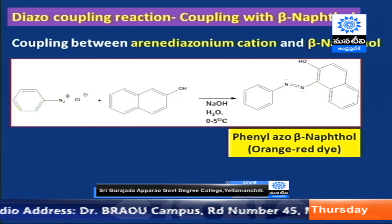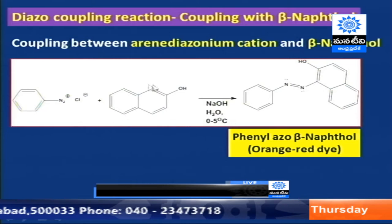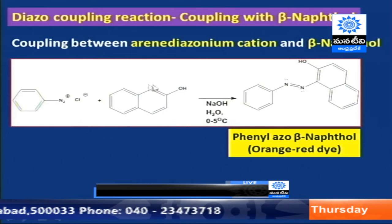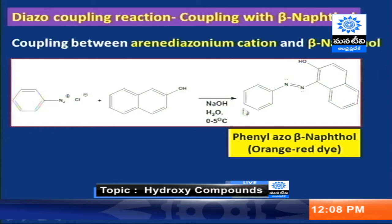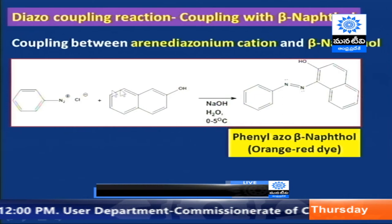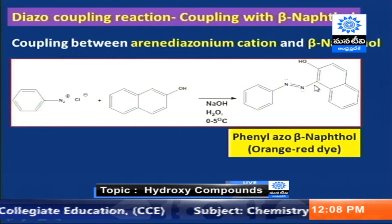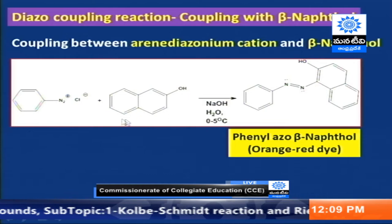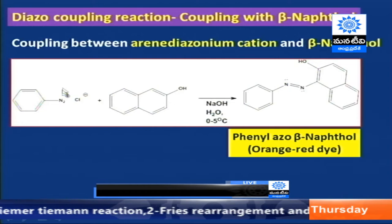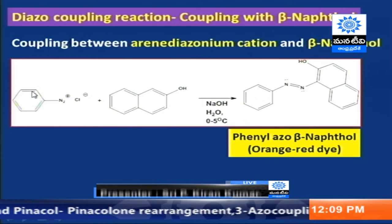The coupling reaction with beta-naphthol is generally carried out in our laboratory. We take the arene diazonium ion and react it with beta-naphthol at 0 to 5°C in a weakly basic medium. Since the para positions are part of the fused ring, substitution occurs at the ortho position. We obtain a beautiful orange-red dye called phenyl azo beta-naphthol. By using this reaction, we can identify beta-naphthol and also primary aromatic amines such as aniline.